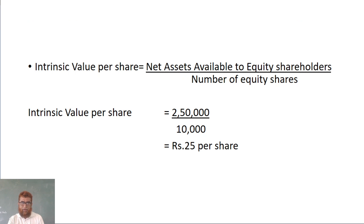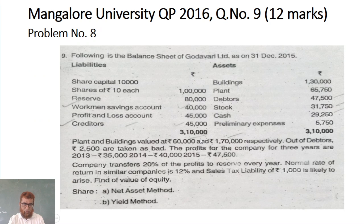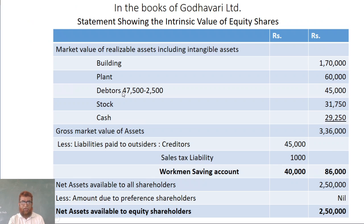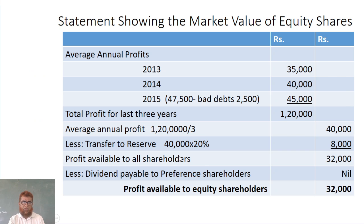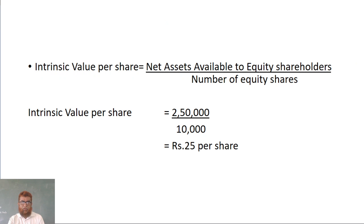Intrinsic value is net assets available to equity shareholders divided by number of equity shares. Net assets are 2,50,000 and number of equity shares is 10,000, so 2,50,000 divided by 10,000 equals rupees 25 per share. This is the net asset method result.